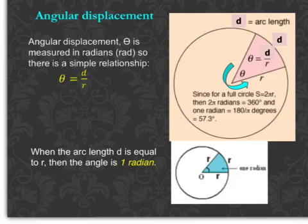For rotational motion, we are dealing with angles. Firstly, angular displacement. Angular displacement theta is measured in radians. Now we have to get you to radians instead of degrees, so there is a simple relationship.